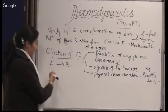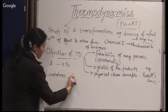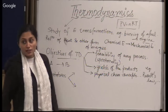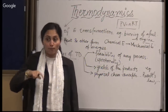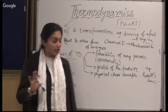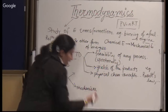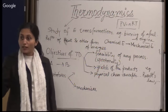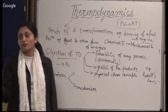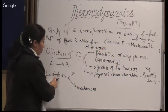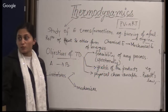But what are the limitations of chemical thermodynamics? The limitations are: it talks about the feasibility of the process, but it is not talking about the path or the mechanism which is followed. It will only tell you that A will convert to B or it will not. It will not tell you how it will convert. So it talks about only the feasibility, but not the mechanism.